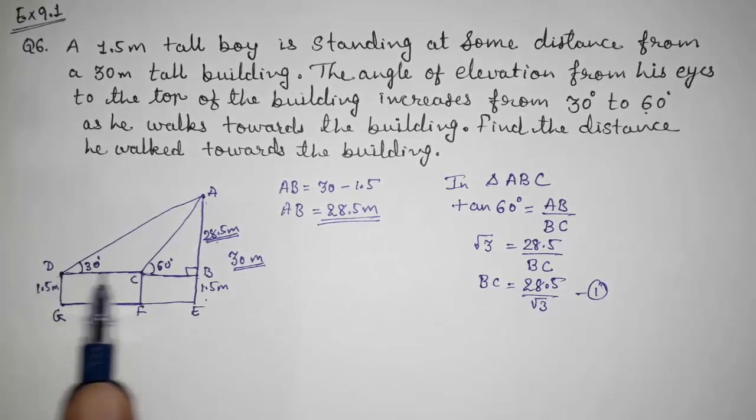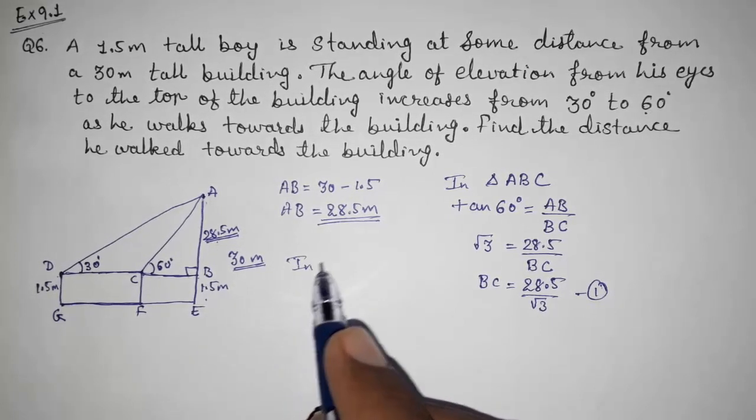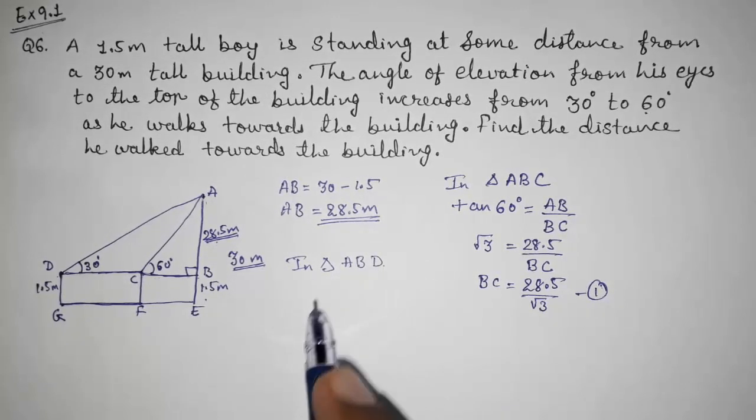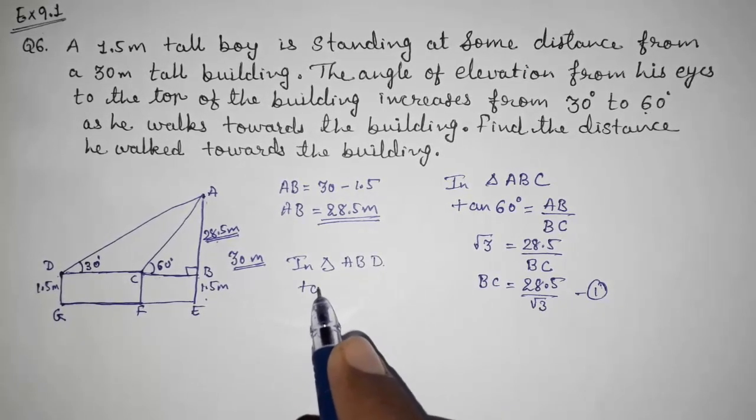Now we are going to find out BD. Look here how. In triangle ABD, tan 30.